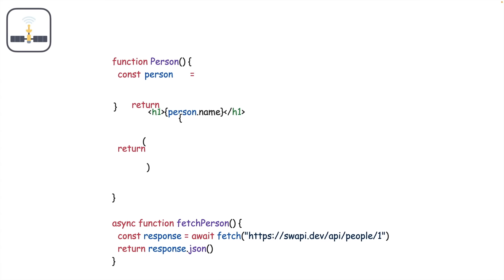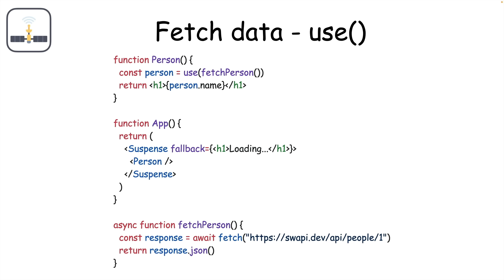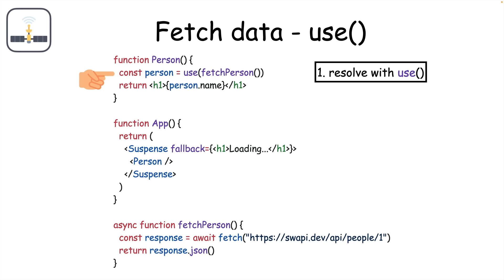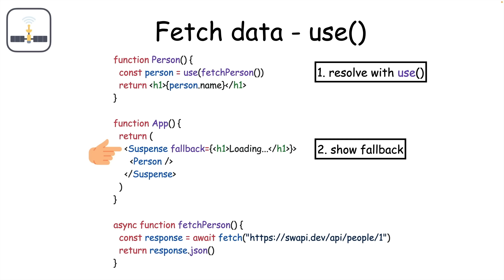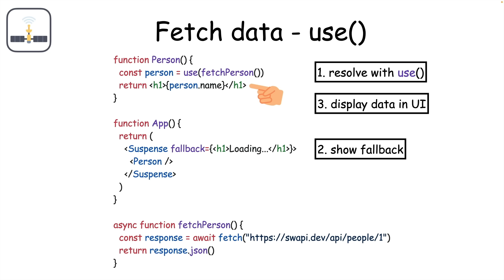Fetching data with the use hook, on the other hand, involves resolving the fetch function, which returns a promise. While fetching data, you use the React Suspense component to show a fallback UI. And once the promise is resolved, we can show the fetched data in the UI. All of this is a lot cleaner and easier to read than with useEffect.